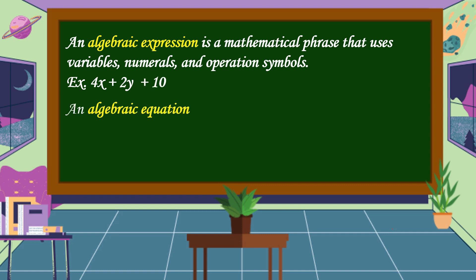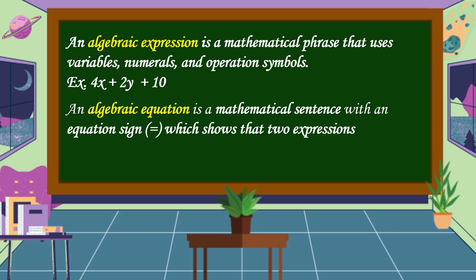An algebraic equation is a mathematical sentence with an equation sign which shows that two expressions on either side are equal. For example, 4x plus 2y is equal to 10.